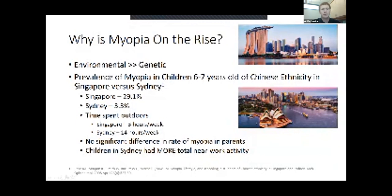They found that children in Singapore, which would mirror Asia and Southeast Asia lifestyles more, had a prevalence rate of 30% compared to almost 3% in Sydney. Of all the factors they looked at, the one that stuck out the most was that children in Sydney were spending 14 hours a week outdoors compared to only three in Singapore. Pretty drastic difference.